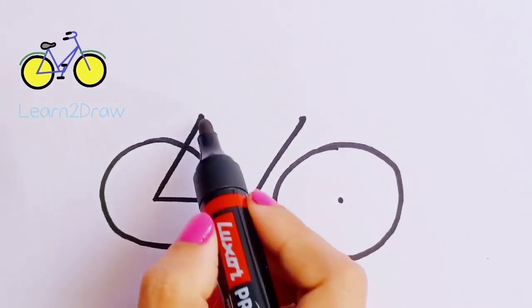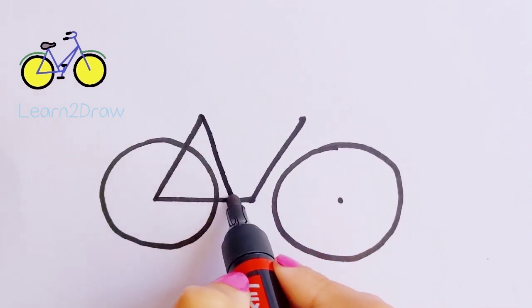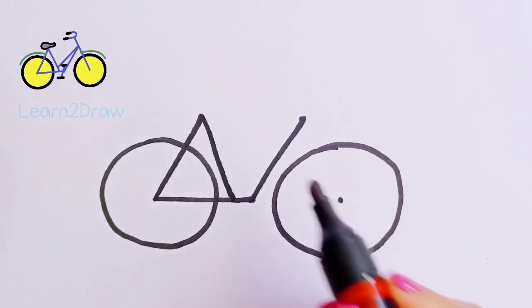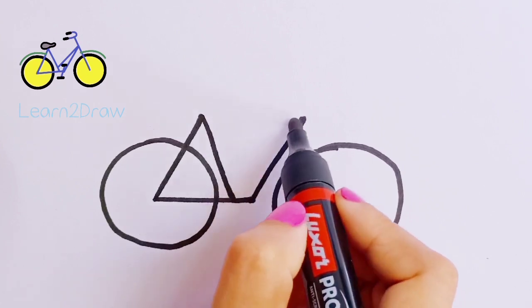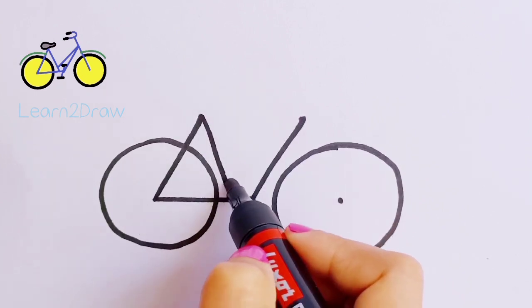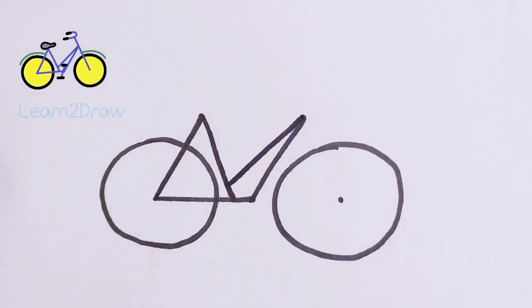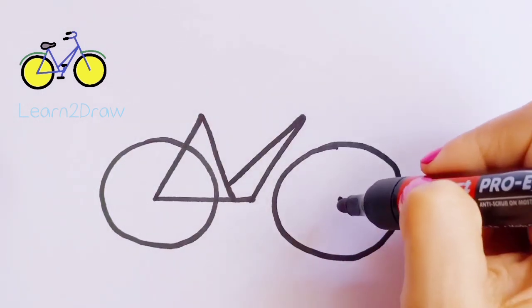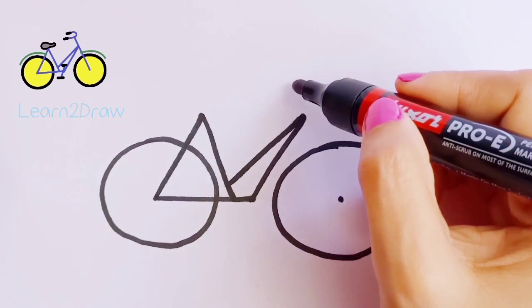From here till here, you need to draw a big line to the front wheel.